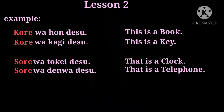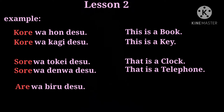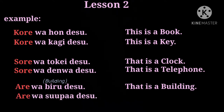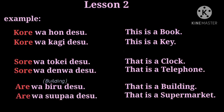Examples for Are: Are wa biru desu means that is a building — biru means building. Are wa supa desu means that is a supermarket — supa means supermarket.